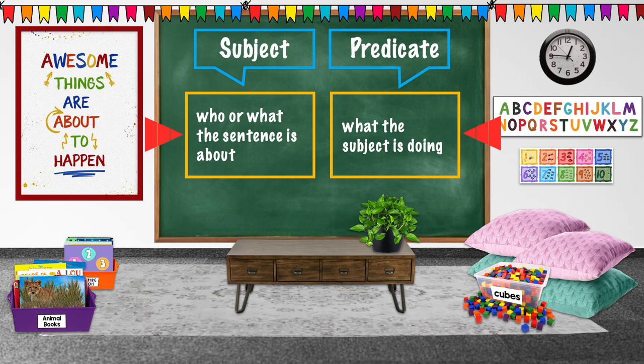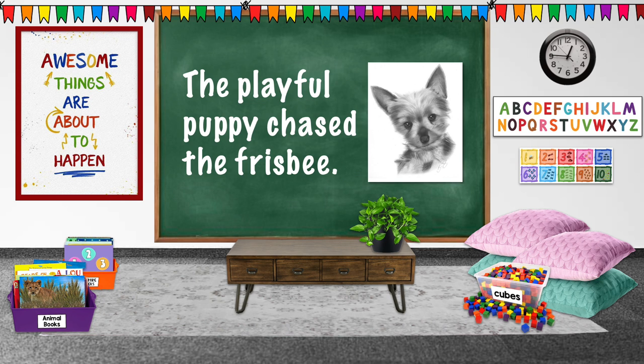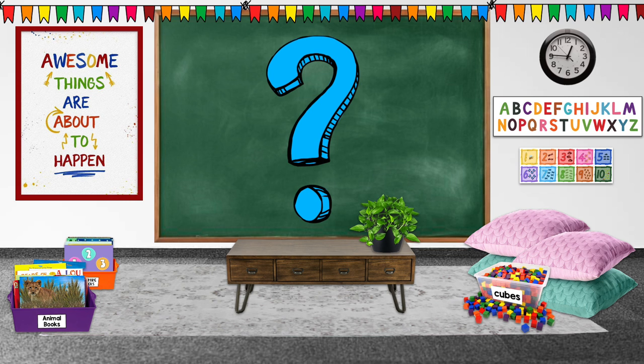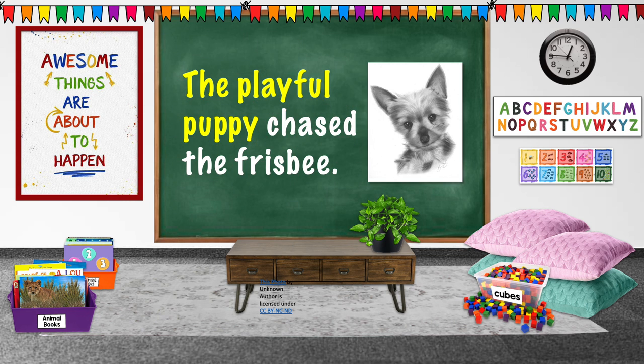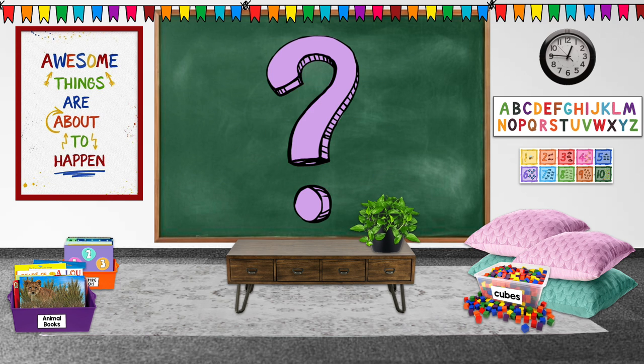Let's practice finding them both. Look at this sentence: the playful puppy chased the frisbee. Who or what is this sentence about? It's about the playful puppy. That's our subject. Now what did the playful puppy do?